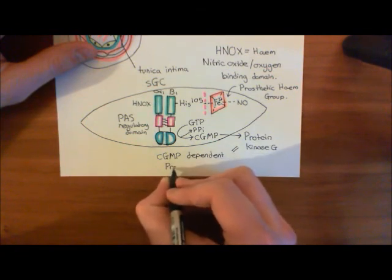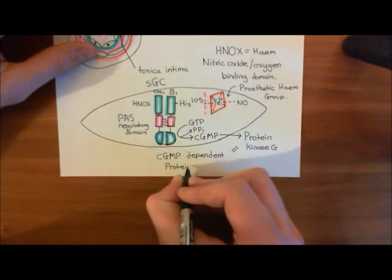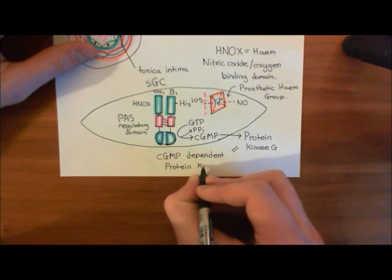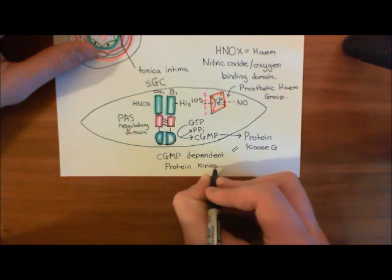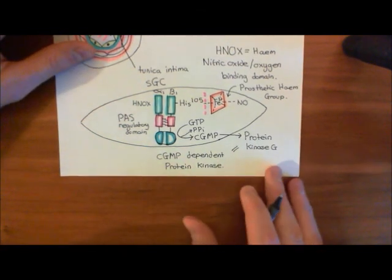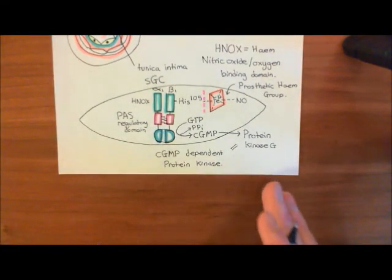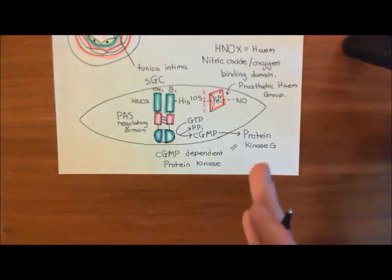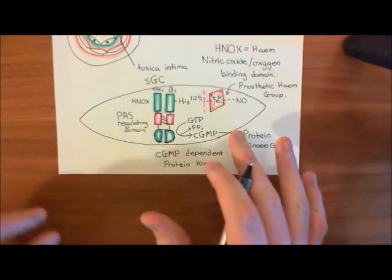Okay, and it is a serine-threonine kinase, so it adds phosphate groups onto serine and threonine residues of proteins. Okay, so which proteins is it going to interact with? Well, basically, it's going to phosphorylate proteins, and the way it phosphorylates proteins, the combination of proteins that it activates and inhibits is going to basically lead to relaxation of this smooth muscle cell.